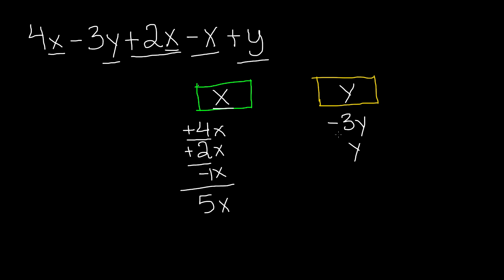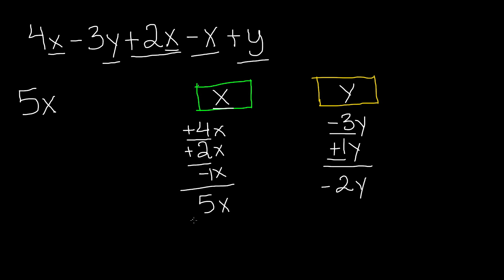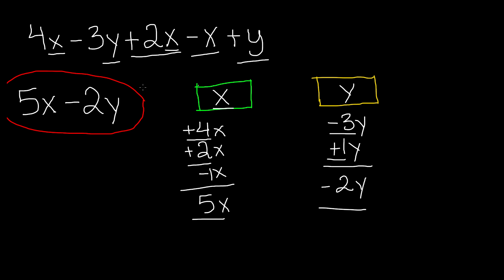Now for the y category, we have negative 3y and positive y. Remember, if there's no constant in front, it's 1. So negative 3 plus positive 1 gives us negative 2, so negative 2y. Now we put it all together: 5x minus 2y. That's the answer to this expression.